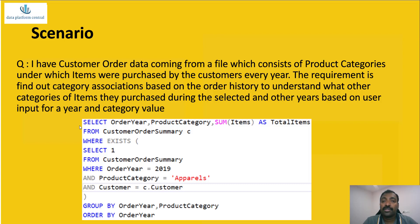In SQL Server you would use a query like this. These are typical correlated subquery patterns. In this example we are finding all users who bought apparel items in 2019 and trying to find out what other categories they bought across all years. This is a simplistic scenario — in the actual case it might be more complicated.